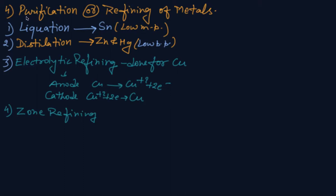Hello guys, now it is the fourth part that is known as purification or refining of metals. There are various processes. Number one is liquevation. Liquevation is generally done for tin, bismuth, lead, and mercury.